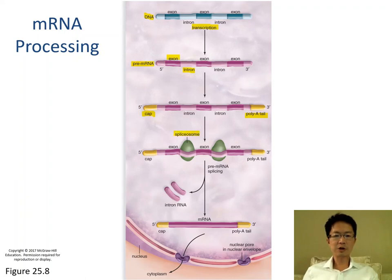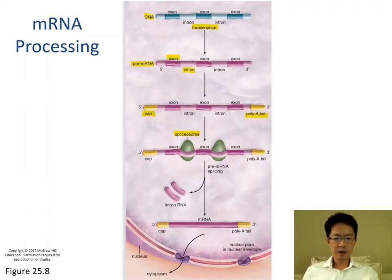The spliceosome is the one that will remove all the introns. After the introns are removed, the mature RNA will only have the exons.